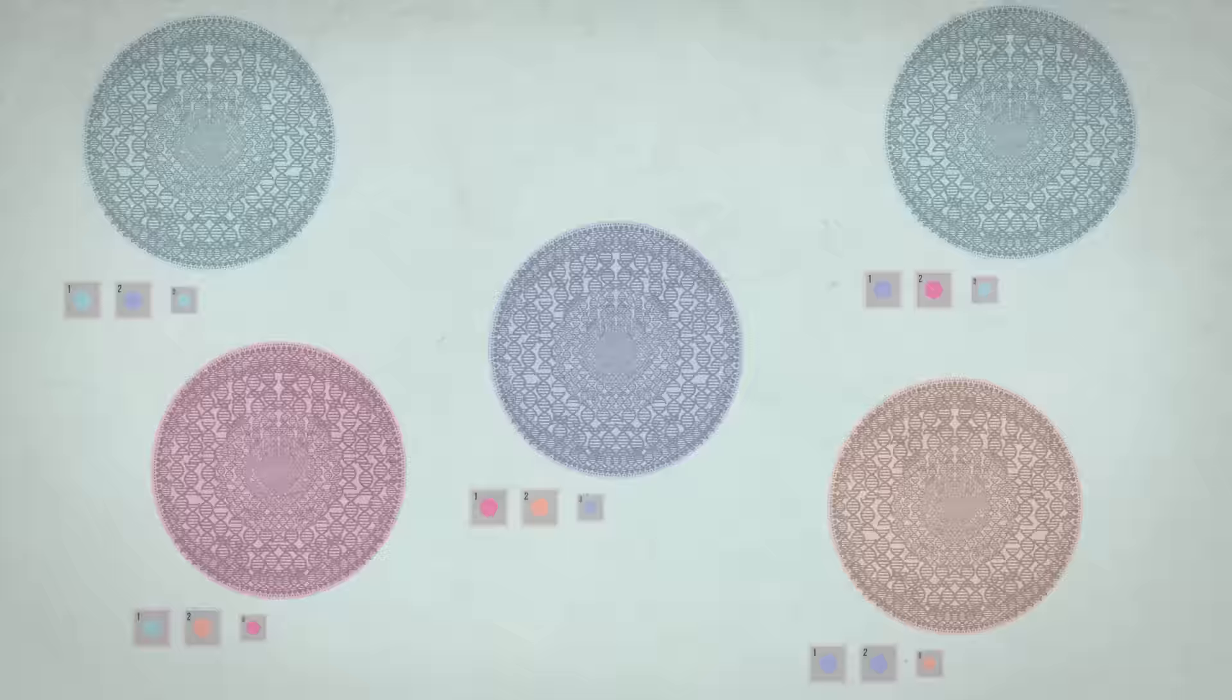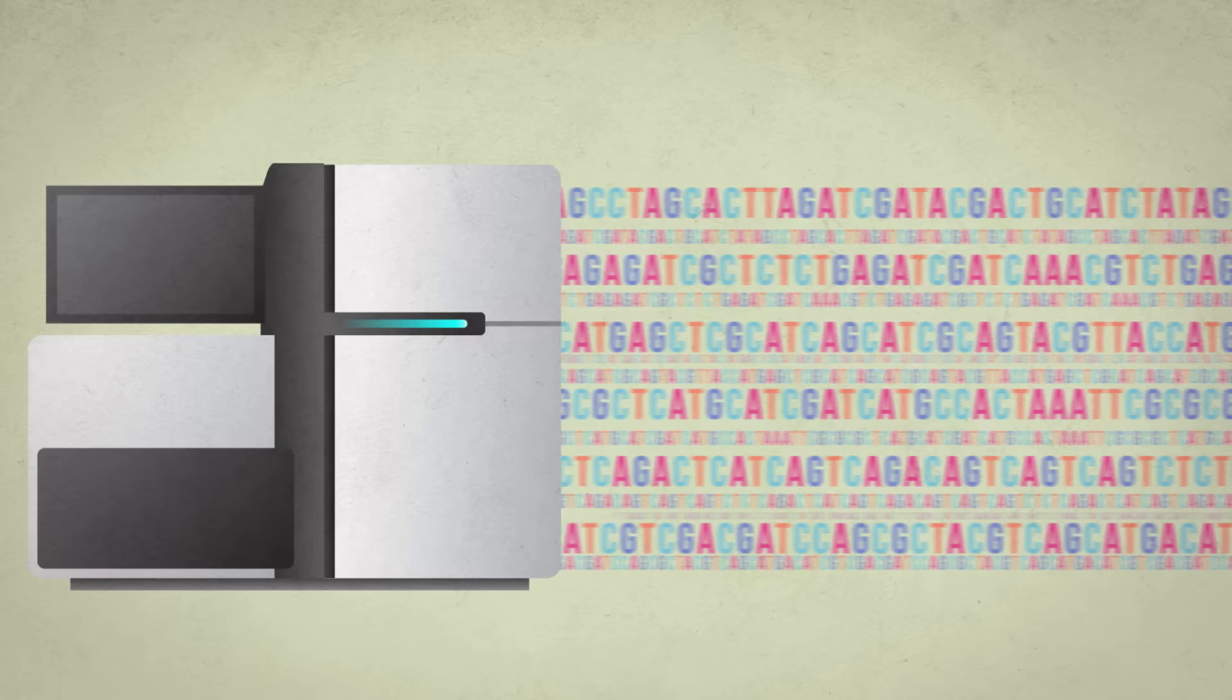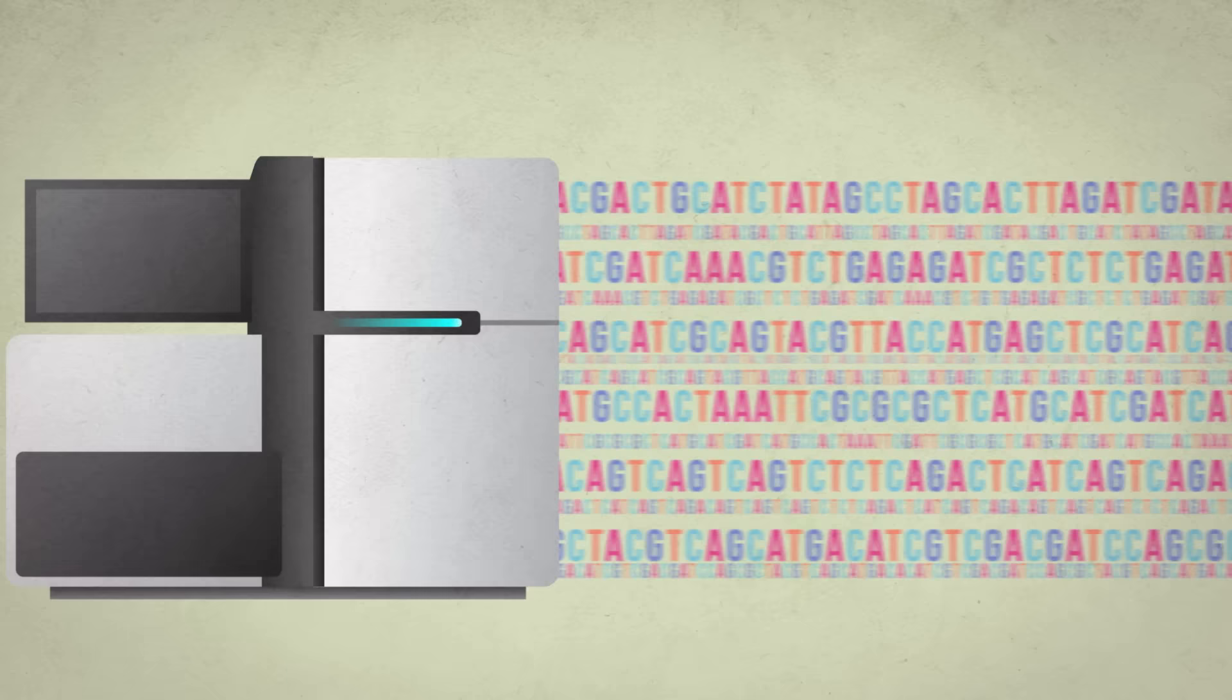Scientists then take pictures of each snippet of genome. Seeing the order of the colors allows us to read the sequence. The sequences of each of these millions of pieces of DNA are stitched together using computer programs to create a complete sequence of the entire genome.